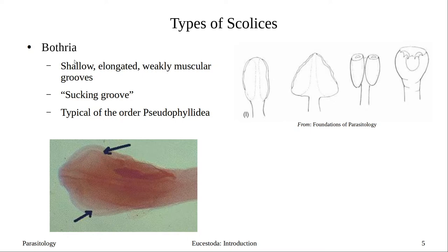Scolex type two is called bothrial. A bothrial scolex has shallow, elongated, weakly muscular grooves — no suckers. These are described as sucking grooves, like a mitten shape. When they contract, they can grasp and hold onto parts of the intestine. Various types exist, but all share: no suckers, shallow groove, muscular so they can pinch and hold on. This scolex type is typical of the order Pseudophyllidea.